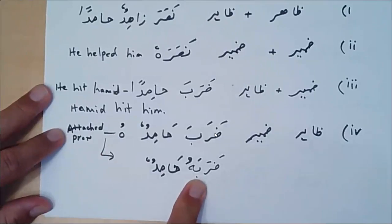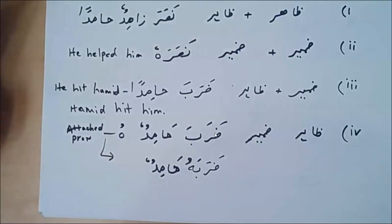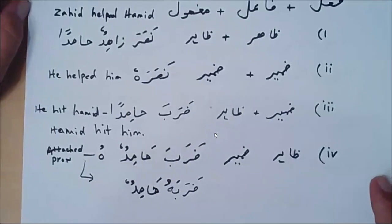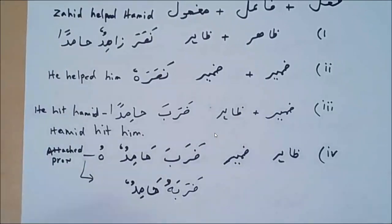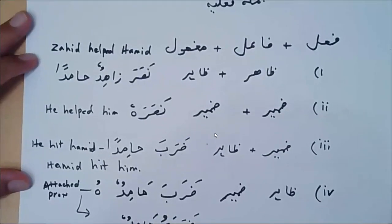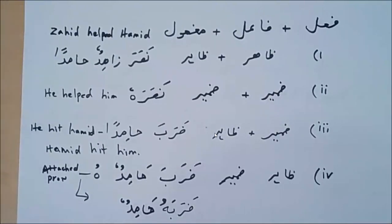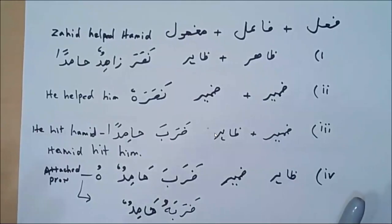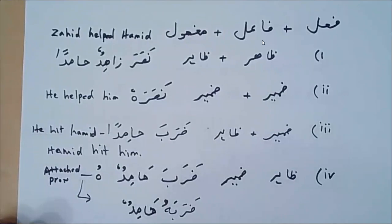The fourth possibility is that the fa'il is zahir and the maf'ul is zamir. For example, Hamid hit him — Daraba Hamidun hu. But that doesn't sound right, so the attached zamir gets attached to the verb. The maf'ul has come before the fa'il, so the combination changes. Does everyone understand this slide? Any questions? The rest of the lecture is based on this one page.